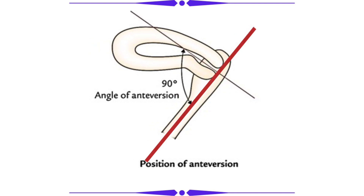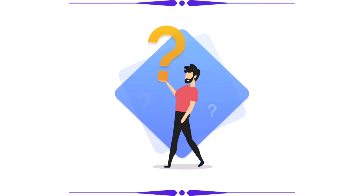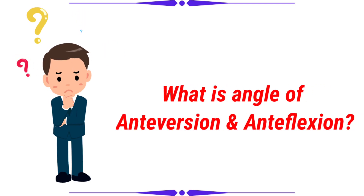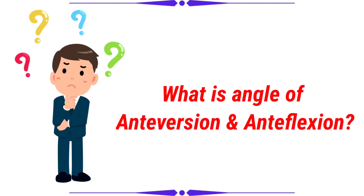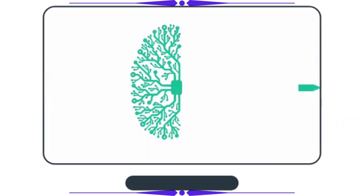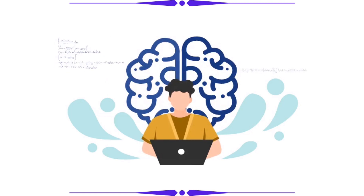The angle of anteversion is formed by the axis of the cervix and the axis of the vagina — it measures around 90 degrees. I will quickly ask you a question: what is the angle of anteversion and anteflexion? You smart people can answer right now, but if I ask the same question after two weeks, you probably can't. So I will move to the most important part of the video.